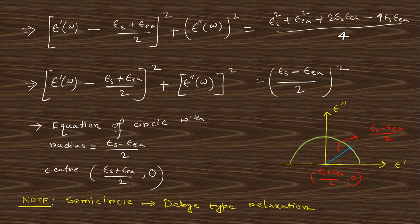Following these steps, you get an equation of a circle with a certain radius and center. This gives a circular representation between the real part of epsilon and the imaginary part of epsilon. These two equations give a semicircle, so if you obtain a semicircular curve between the real and imaginary parts of the dielectric constant, you can identify it as Debye-type relaxation.